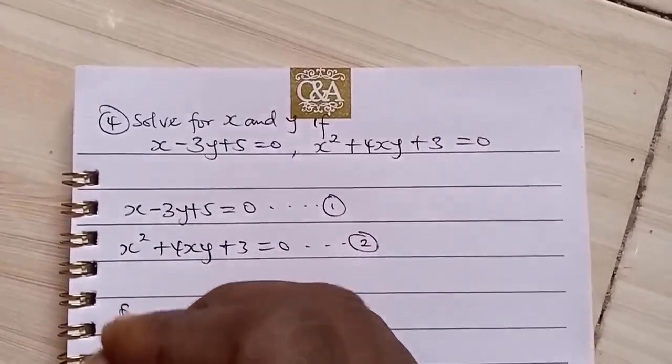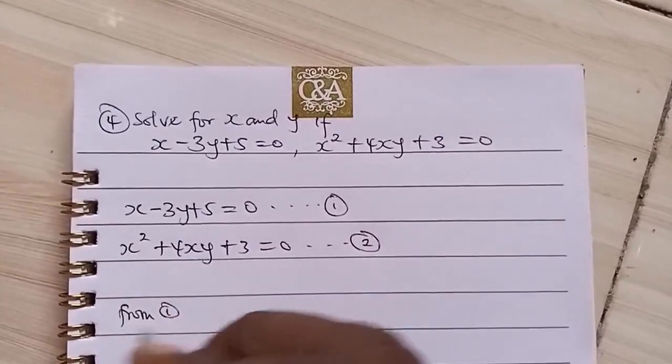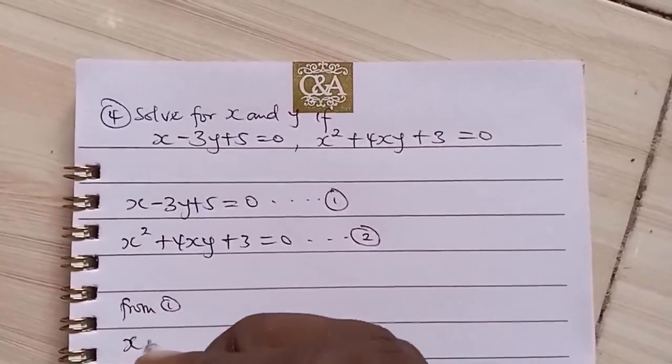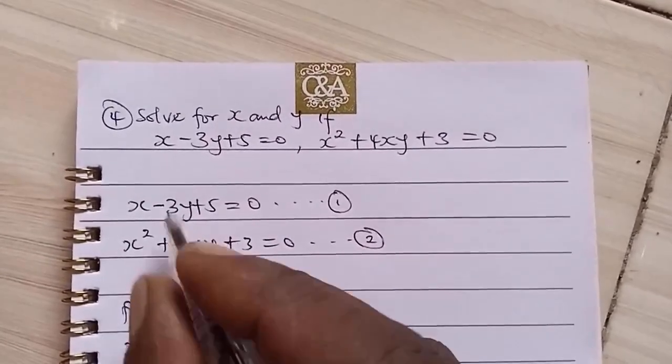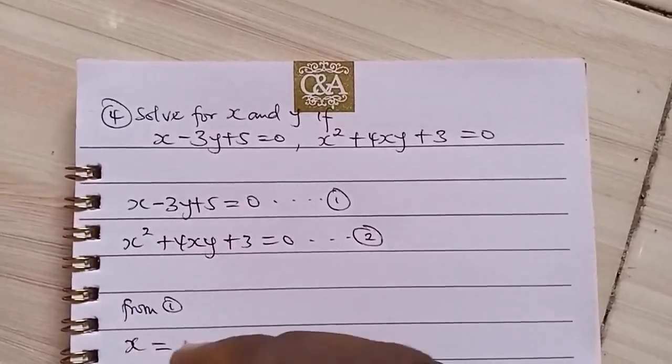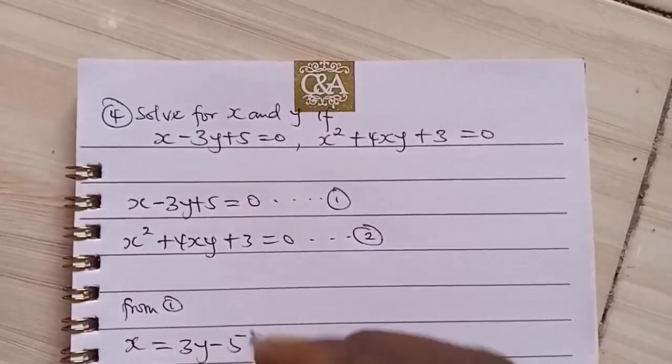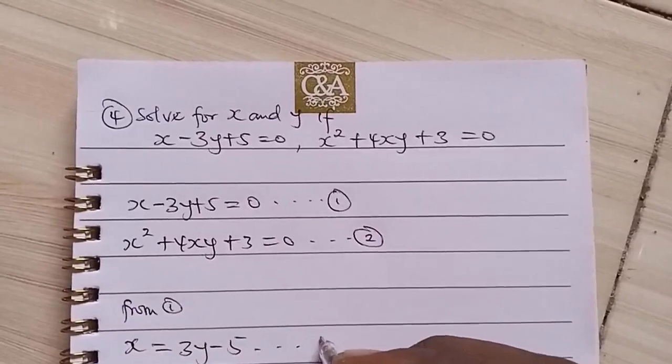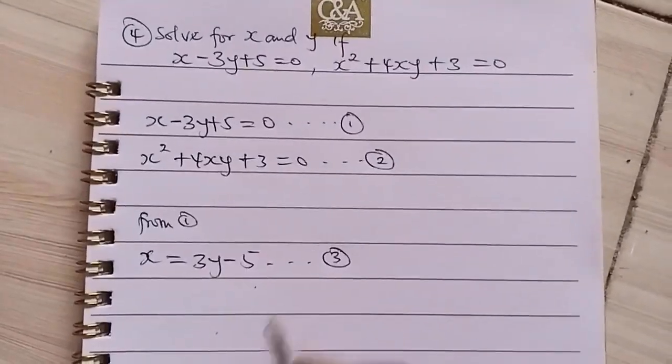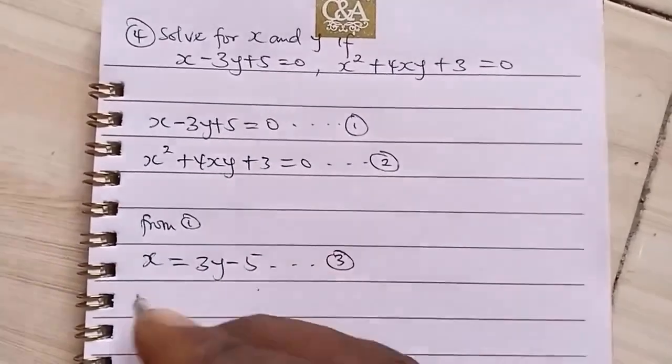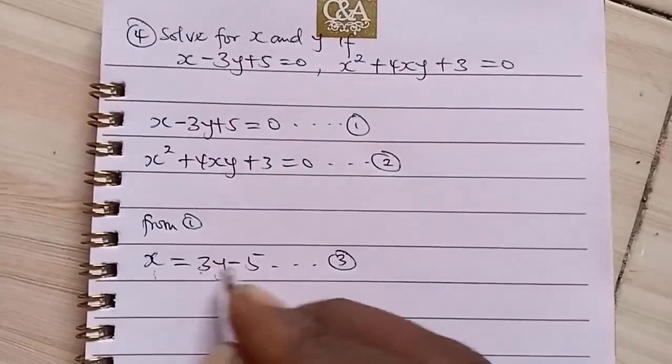Having established this, from equation 1, we have that X, if we take this to the other side it becomes plus, X is equal to 3Y minus 5. We can call this equation 3. If we now substitute it into equation 2, anywhere we see X, we replace it with 3Y minus 5.